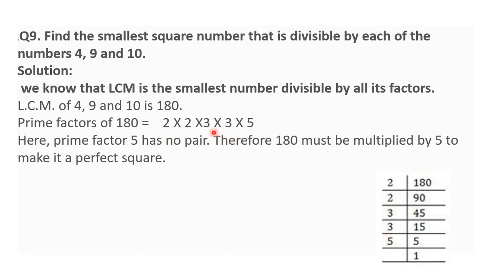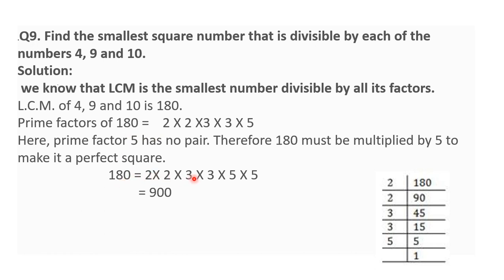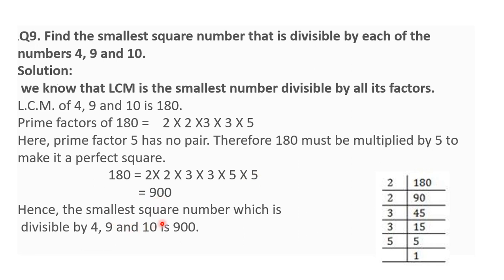Here we observe that in the prime factorization of 180, the prime 5 is not in a pair. Therefore, 180 must be multiplied by 5 to make it a perfect square number. So 180 = 2 × 2 × 3 × 3 × 5 × 5, which equals 900. The smallest square number divisible by 4, 9, and 10 is 900.